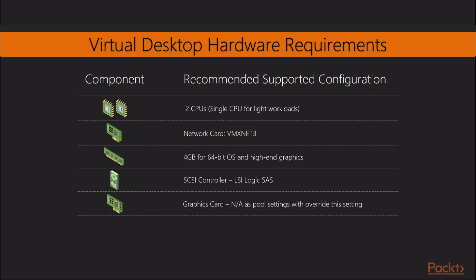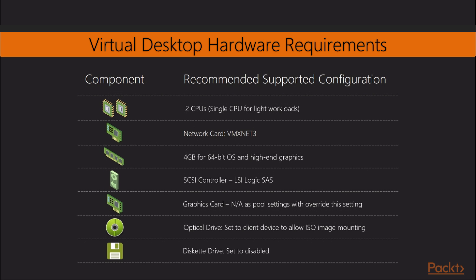There is no need to configure the graphics card, as any settings configured here will be overridden by the desktop pool settings later. The optical drive should be set to Client Device so that you are able to mount ISO images to the virtual desktop machines. The diskette drive should be set to Disabled in the virtual machine BIOS, as should the parallel and serial ports. Another important factor is not to fall into the trap of oversizing your virtual desktop machines. For example, if you only need one virtual CPU, then only give it one virtual CPU. This is why your desktop assessment data is critical.